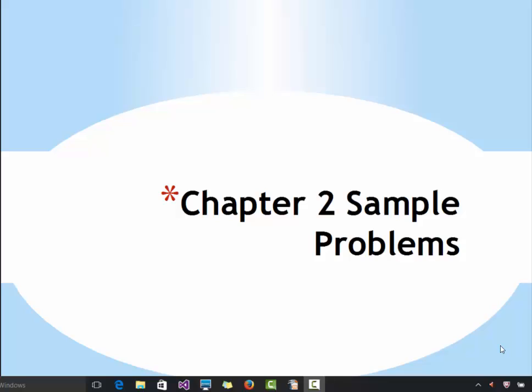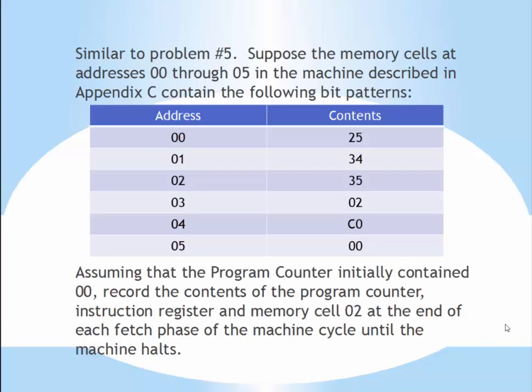This video is going to help you do some of the lab problems in chapter 2. I have not covered all the problems but I've covered some of them, especially the ones that students have had trouble with. The machine language instructions are found in Appendix C. The first problem is very similar to problem number 5. Make sure you can refer to Appendix C in your book as you do these problems. Also make sure you read the section about the fetch, decode, and execute cycle in your book, in chapter 2.